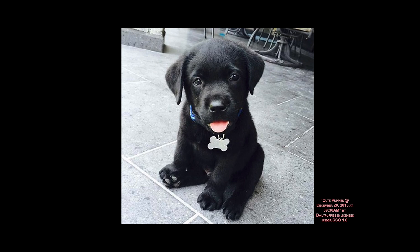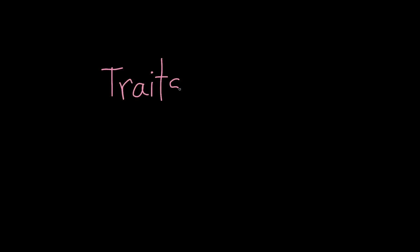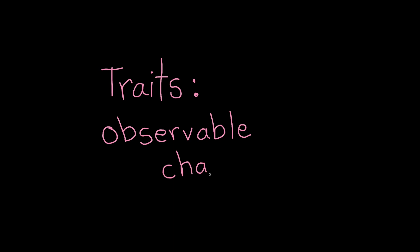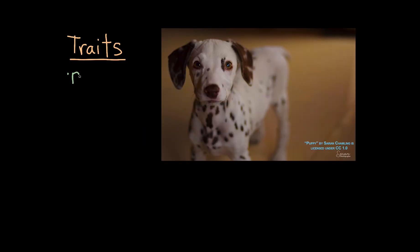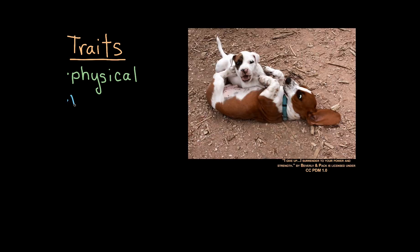But where do these traits come from? In this video, we're going to find out. But first, let's start at the beginning. What exactly are traits? Traits are specific, observable characteristics. They can be physical, like our puppy's eye color. They can be behavioral, such as a dog being more or less aggressive towards strangers.